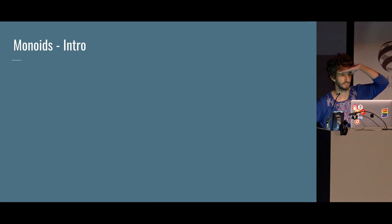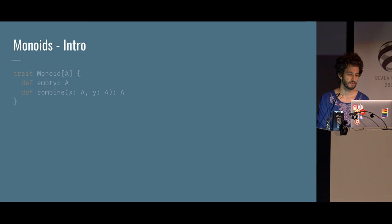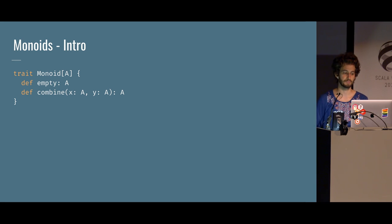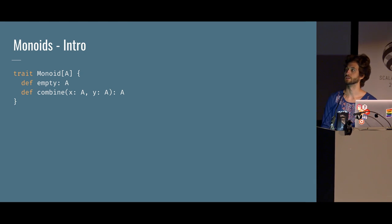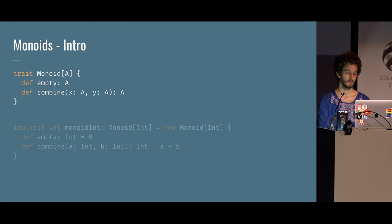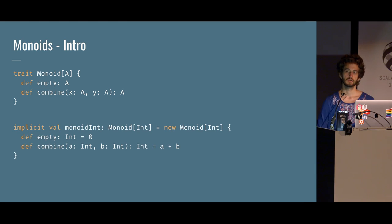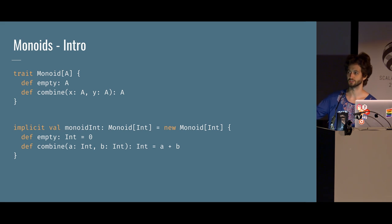Who here knows monoids? Oh, that's a lot of you — great. So I'm going to be quick about this. A monoid is a type class, and it's defined by these two methods: empty and combine. Empty just returns an A that is parameterized over the monoid, and combine just takes two A's and combines them into a single A.